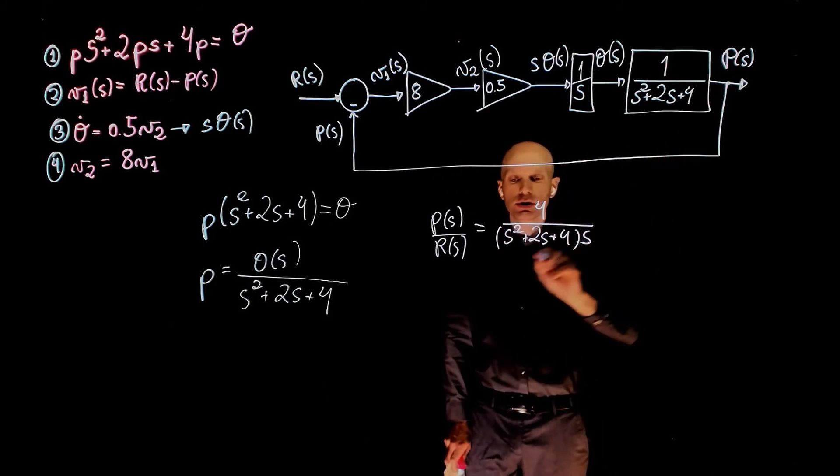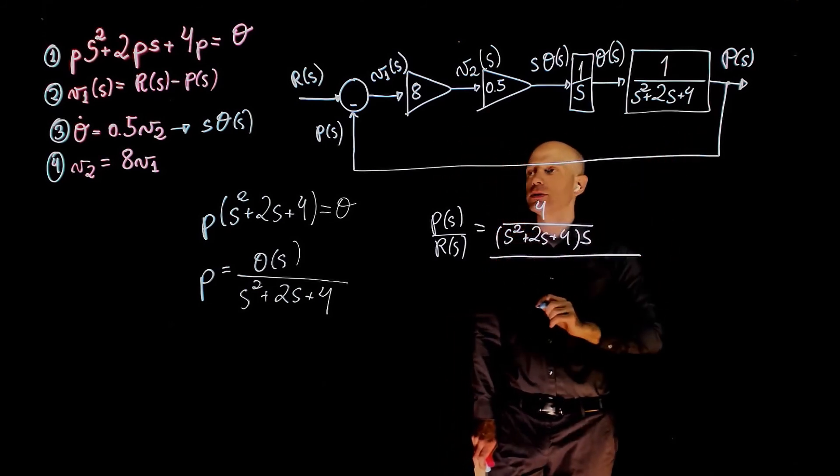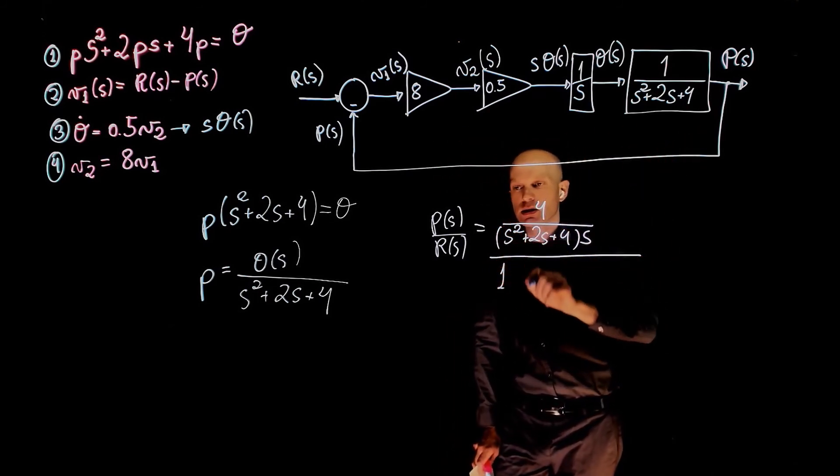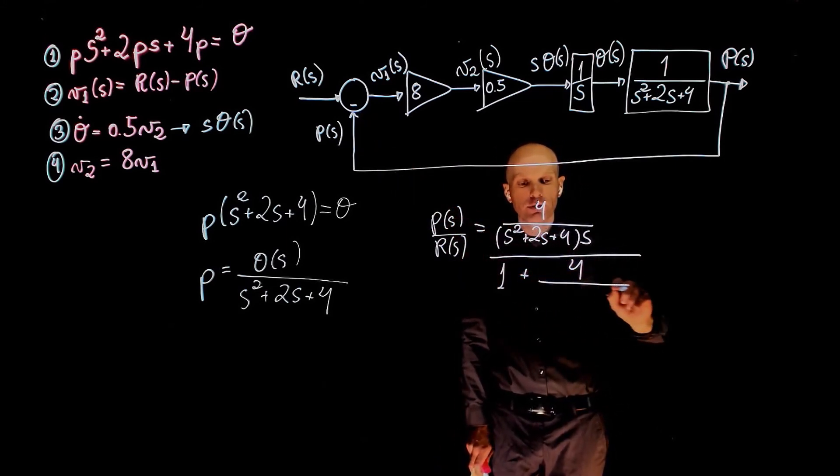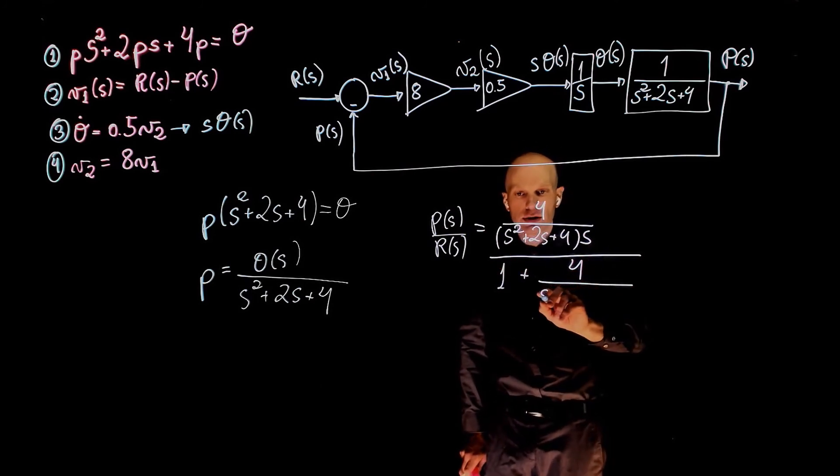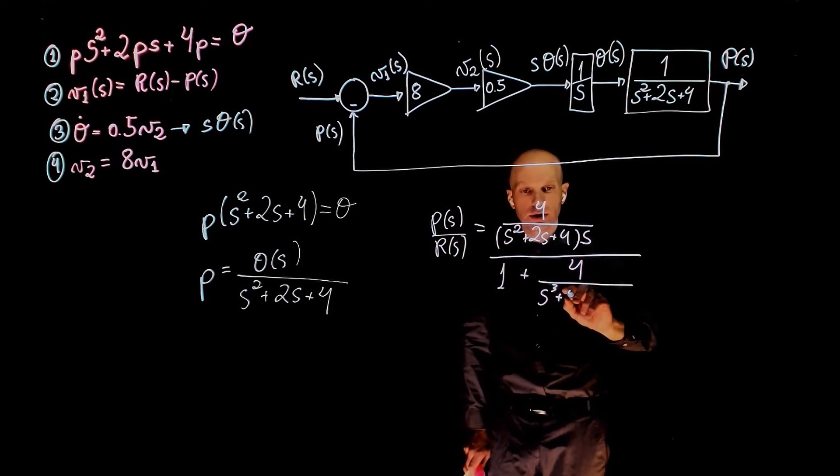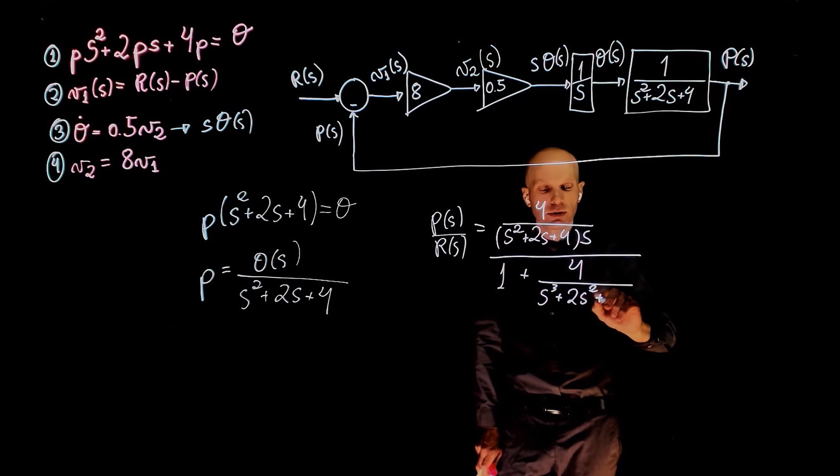And this is the line function, and because of the feedback loop, now we have 1 plus that same function, plus again because of the negative sign here. So 1 plus 4 over, multiplying this out, s to the power of 3 plus 2s squared plus 4s.